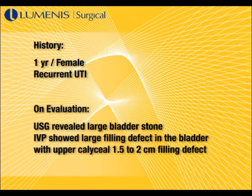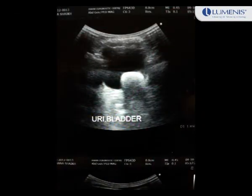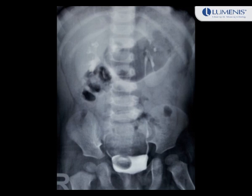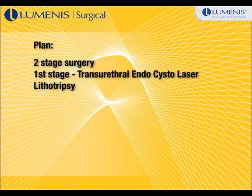A one-year-old female child was referred from a pediatrician for recurrent urinary tract infection. On ultrasonography she was found to have a large bladder stone. On further evaluation, an IVP was done which showed a large filling defect in the bladder with an upper calyceal 1.5 to 2 centimeter filling defect. A two-stage surgery was planned for this child. This is a video demonstration of transurethral endocysto laser lithotripsy of a large bladder stone in a one-year-old female child.